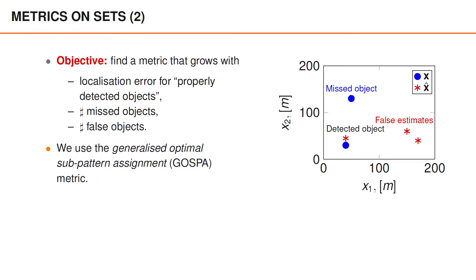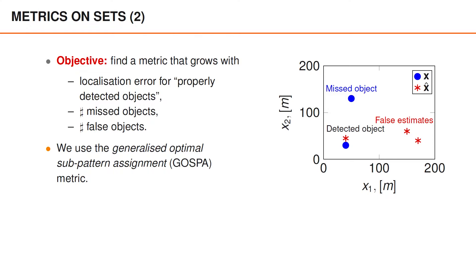In this course, we use the generalized optimal sub-pattern assignment metric, or GOSPA for short. There are other metrics that one can use for multi-object tracking, but we prefer GOSPA for various reasons. A rough description of GOSPA is that it is the sum of the localization error and c over 2 times the number of missed and false objects, where c is a design variable. In the figure, there are three false and missed objects in total. GOSPA would therefore be the distance between the properly detected object and its estimate, plus c over 2 times 3.